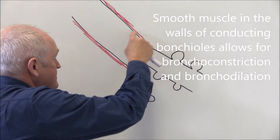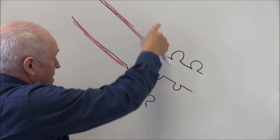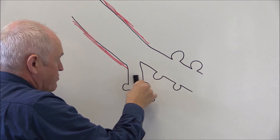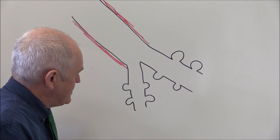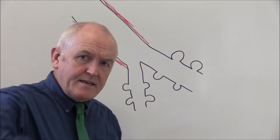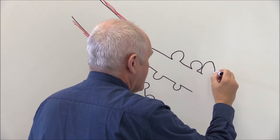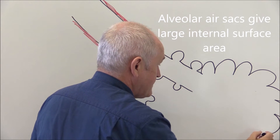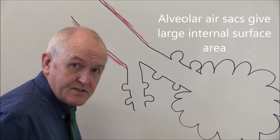The terminal bronchiole is the last of the conducting airways, but even in the terminal bronchiole the wall is too thick for oxygen to diffuse through or for carbon dioxide to be returned from the blood. So: terminal bronchiole, then respiratory bronchioles — the first time it's thin enough for gaseous exchange. The respiratory bronchioles end in clusters of alveoli forming big clusters — these are the air sacs.